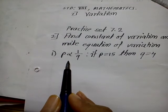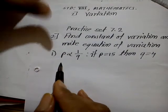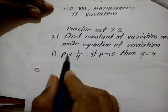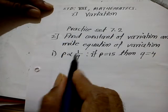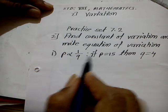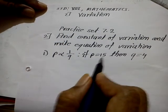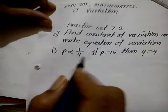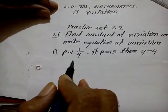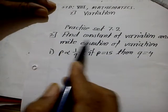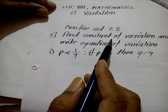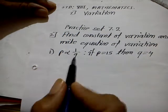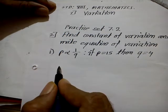There are four examples given to us. The first example: P is directly proportional to Q. If P is equal to 15, then Q is equal to 4. We have to find the constant K and write the equation of variation.